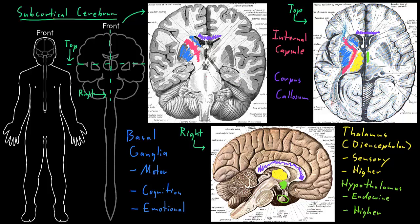I'll stop here, because I just wanted to introduce these structures that are deep down in the cerebrum — which we call subcortical — so that you can see where they stand in relation to the cerebral cortex on the outside of the cerebrum and the brain stem below.